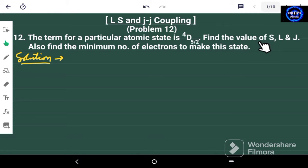We have to find the values of S, L and J, and we also have to find the minimum number of electrons to make this state, this 4D5/2. So let's solve this problem.